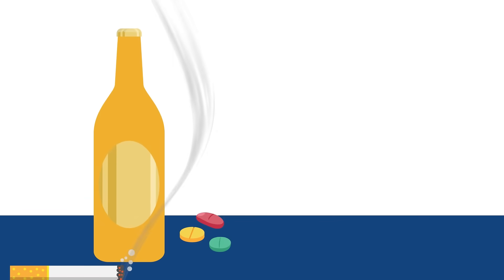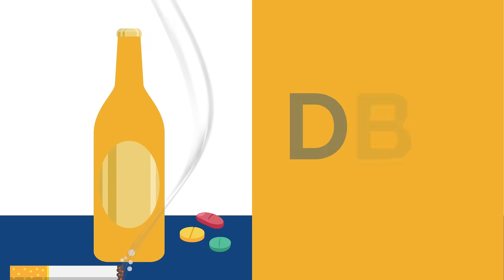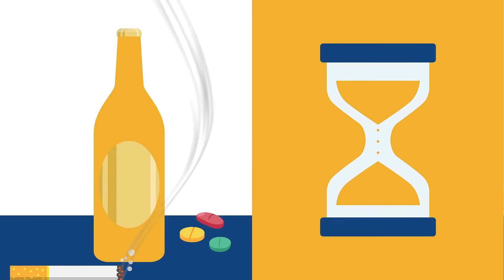For example, if you are experiencing an urge to engage in a problem behavior, you have two options. You can engage in the behavior, or you can use a DBT skill to tolerate the urge until it passes. In that moment, which choice is right for you?